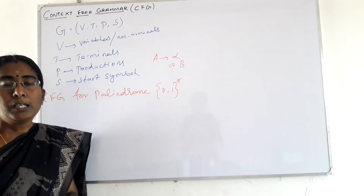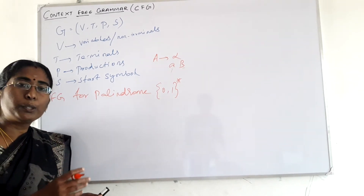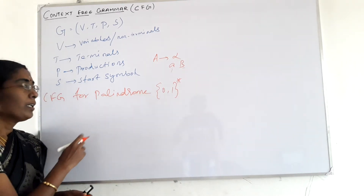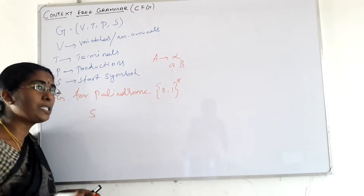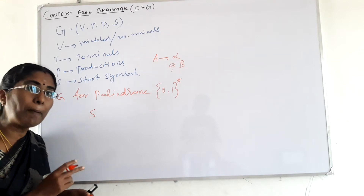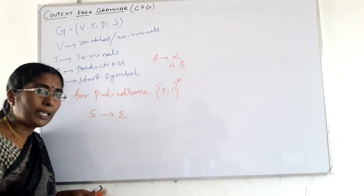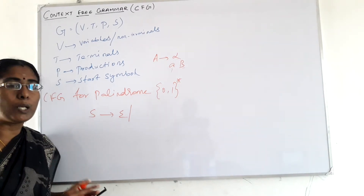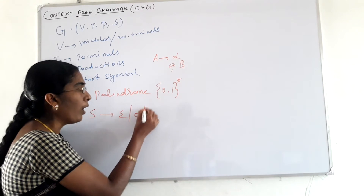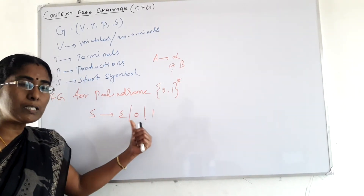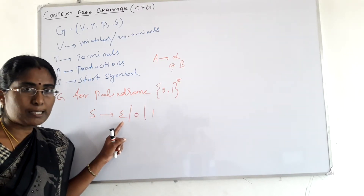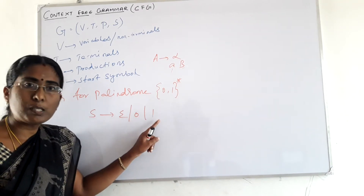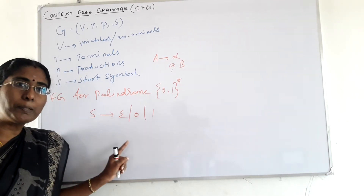We are constructing a CFG for palindrome over the alphabet {0, 1}*, using 0 and 1 as the terminals. A string is a palindrome if it equals the reverse of the string. The minimum possible strings for a palindrome are: epsilon (whose reverse is also epsilon), 0 alone, and 1 alone. So epsilon, 0, or 1 are the three basic symbols satisfying the palindrome condition.